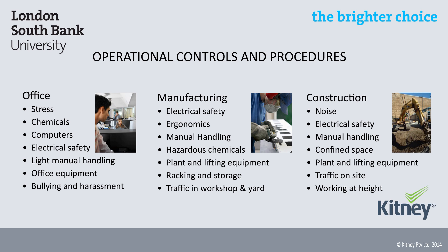For a manufacturing environment, the system may include controls for plant and equipment such as drills, conveyors, lathes, cranes, hoists and forklifts. Hazardous chemicals will also play an important part, as well as noise, racking, storage, traffic within the workshop or yard, and the ergonomics associated with operating equipment and working at benches. For a construction company, the system would include controls for high risk hazards such as confined space, falls from height, noise, hazardous chemicals, manual handling, electricity, as well as the large variety of plant and equipment used on construction sites.